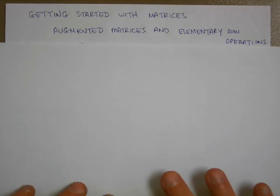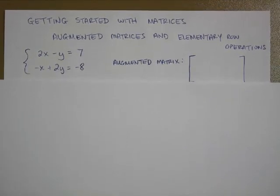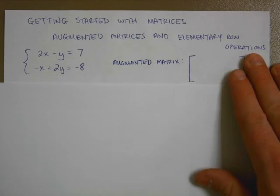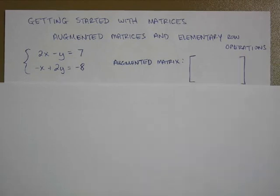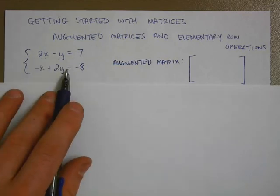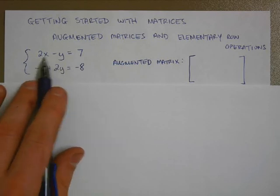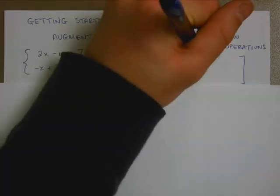The first thing is that I can take a system of equations like 2x minus y equals 7 and negative x plus 2y equals negative 8, and I can turn that into an augmented matrix. Basically, what this means is that I'm going to take the coefficients for each of my terms. Notice I have the x and the y lined up, so everything's vertically aligned, and I can take the 2 and the negative 1 here and put those into a matrix format.